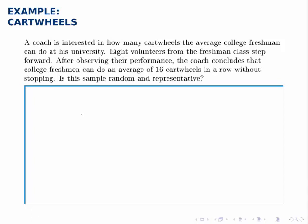Here, the biggest source of bias that we observe — and bias means that the results will be skewed — is voluntary response bias. Voluntary response bias means that rather than picking people to ask, the coach asks for volunteers. In this case, people that are able to do more cartwheels are more likely to step forward and volunteer for the study. Because of that, we conclude that this probably isn't a very good sample to do this study.